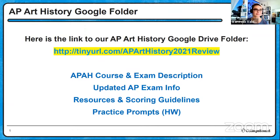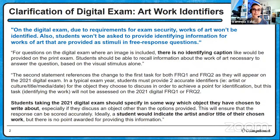I did find out new clarifying information about identifying info on the digital AP exam. This information was just released by College Board to clarify the language of how the digital exam will be different regarding identifiers. You can view this in the 2021 exam formats, which has recently been updated. On the digital exam for art history, due to requirements for exam security, works of art won't be identified.